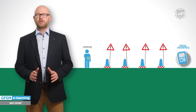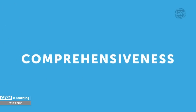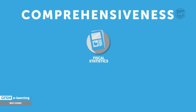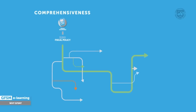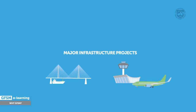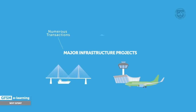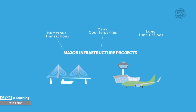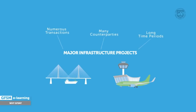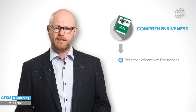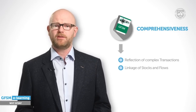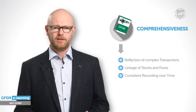The next challenge is comprehensiveness. Comprehensiveness means that fiscal statistics should cover all aspects relevant to fiscal policy. Fiscal policy measures have complex and multiple effects. Just think of major infrastructure projects, which can involve numerous transactions, many counterparties, and last over long time periods. Accounting needs to properly reflect economic reality. GFSM provides a framework that captures complex transactions, that shows links between stocks and flows, and that records events consistently over time.